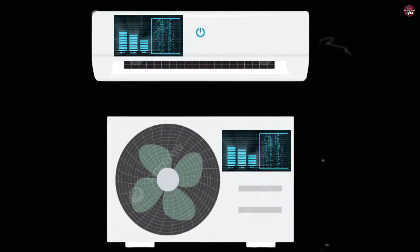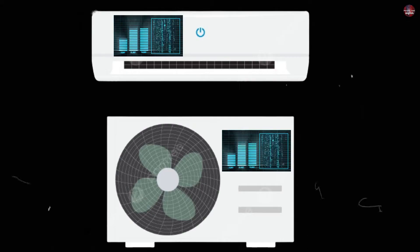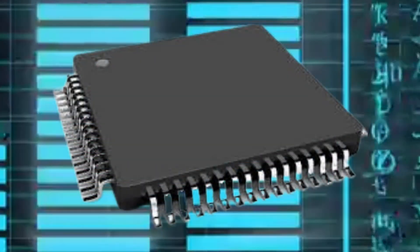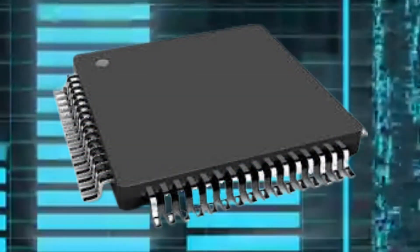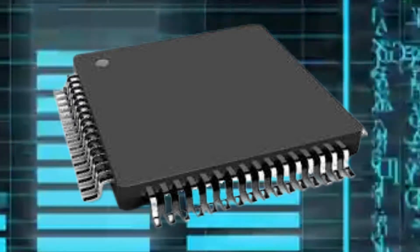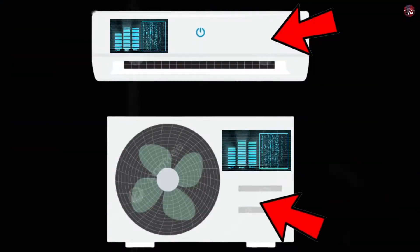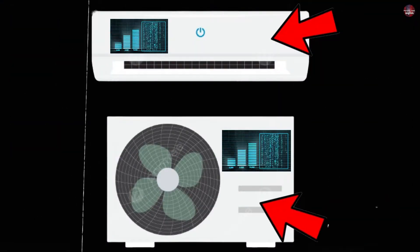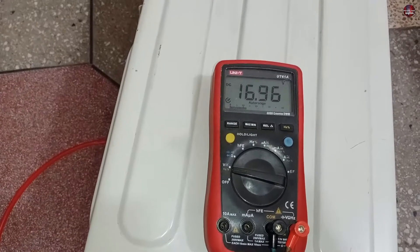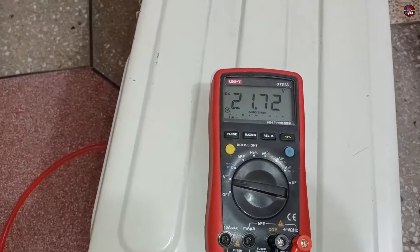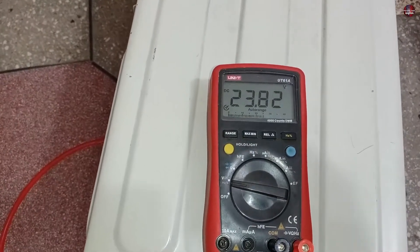Both units are coded in such a way that they should receive the same fixed voltages that are programmed in their microcontrollers. This is how they understand each other and what is going on in the indoor and outdoor unit circuit boards. This voltage fluctuation is the language through which the indoor and outdoor units communicate.